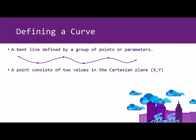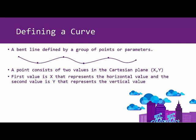A point consists of two values in the Cartesian plane, X and Y, where the X value represents the value that goes from left to right and the Y value is the one that is represented from top to bottom.